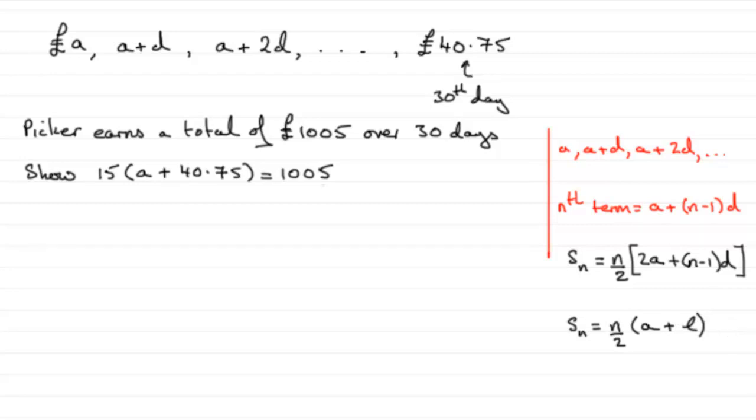And for this question, I would want to use this last one, purely because I know the first term, which is A, and I know the last term, which is 40.75. But I will show you afterwards how we can use this one to get the same answer.